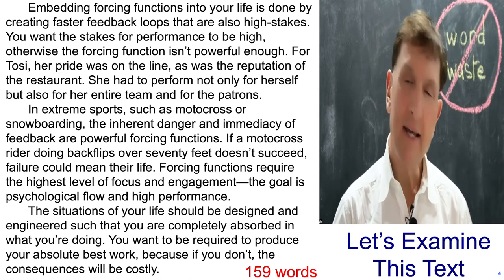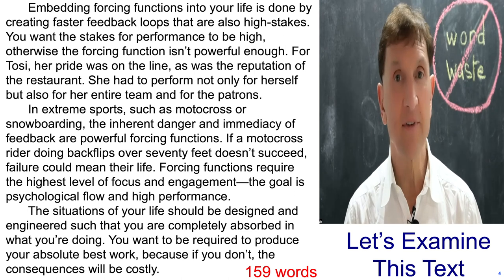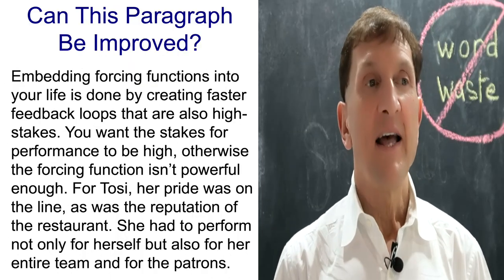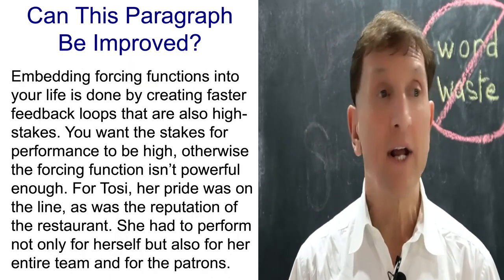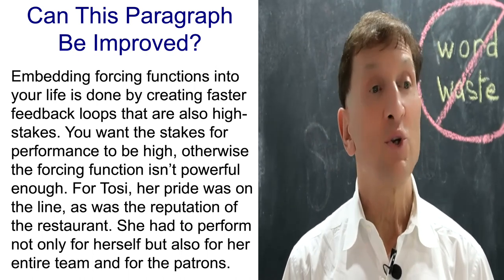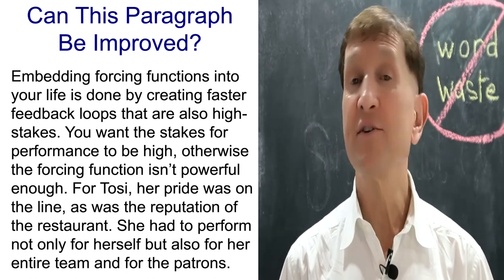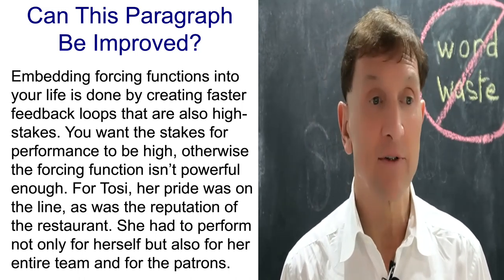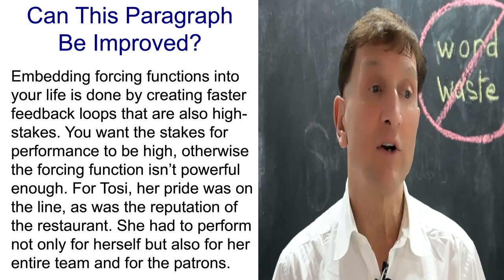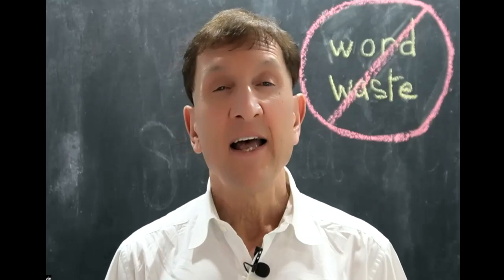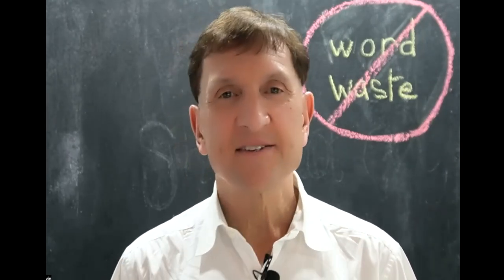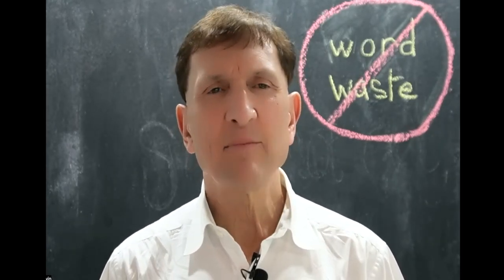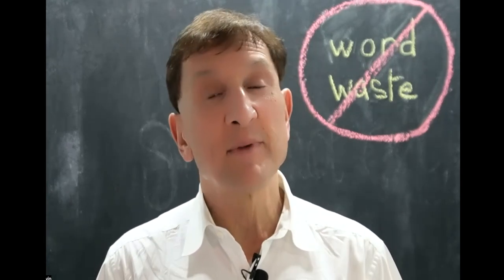I examined this guinea pig piece of text — a bit long to read to you, but trust me, it's 159 words. Let's look at just the first paragraph, see if you can keep your mind on what I'm saying. Embedding forcing functions into your life is done by creating faster feedback loops that are also high stakes. You want the stakes for performance to be high, otherwise the forcing function isn't powerful enough. Potosi, her pride, was on the line, as was the reputation of the restaurant. She had to perform not only for herself, but also for her entire team and for the patrons. Of course, I've taken that out of context — it's kind of difficult for you to understand what it's all about. But did your mind wander a little bit? If it did, it might be because I read it so poorly. Or it could be it's a bit long-winded.